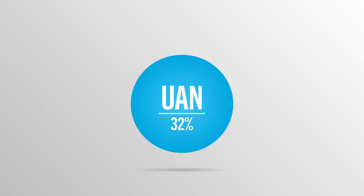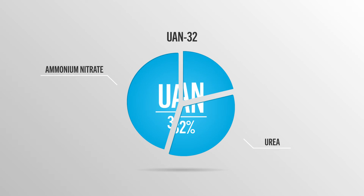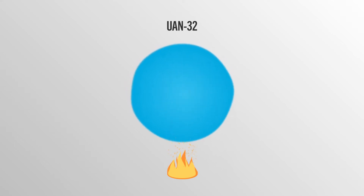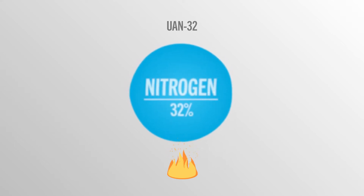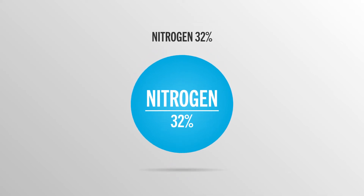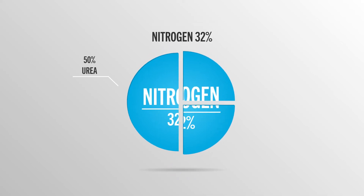UAN 32 is made with urea, ammonium nitrate, and water. A heated solution of melted urea is mixed with a heated solution of ammonium nitrate to develop a clear liquid fertilizer with a nitrogen concentration of 32%. Of that 32% nitrogen concentration, 50% is comprised of urea, 25% of nitrate, and 25% of ammonium.